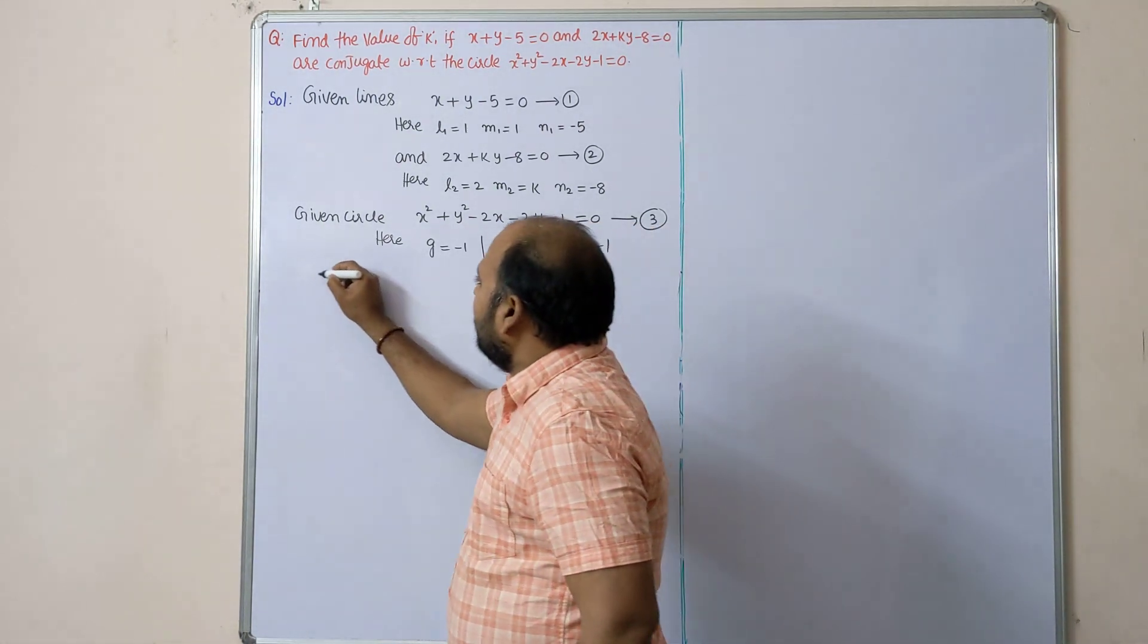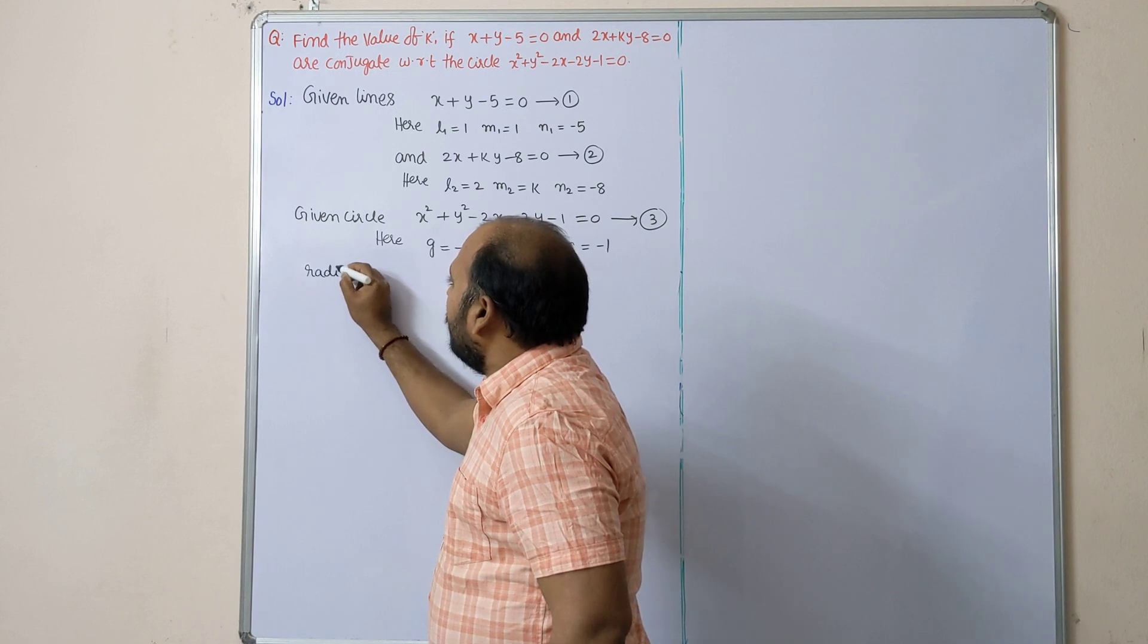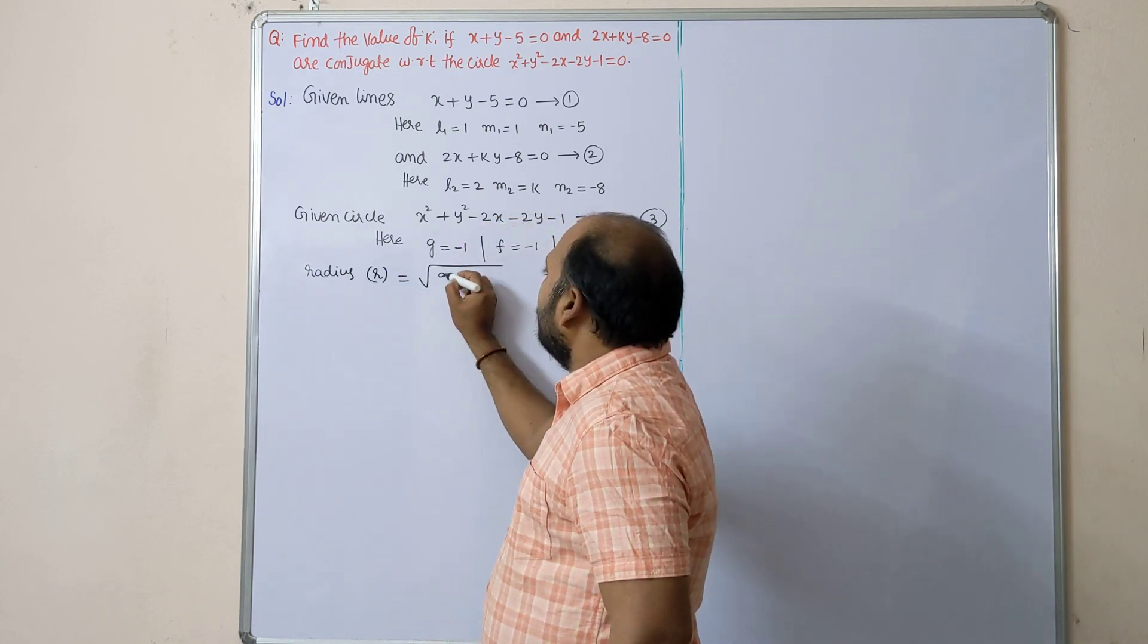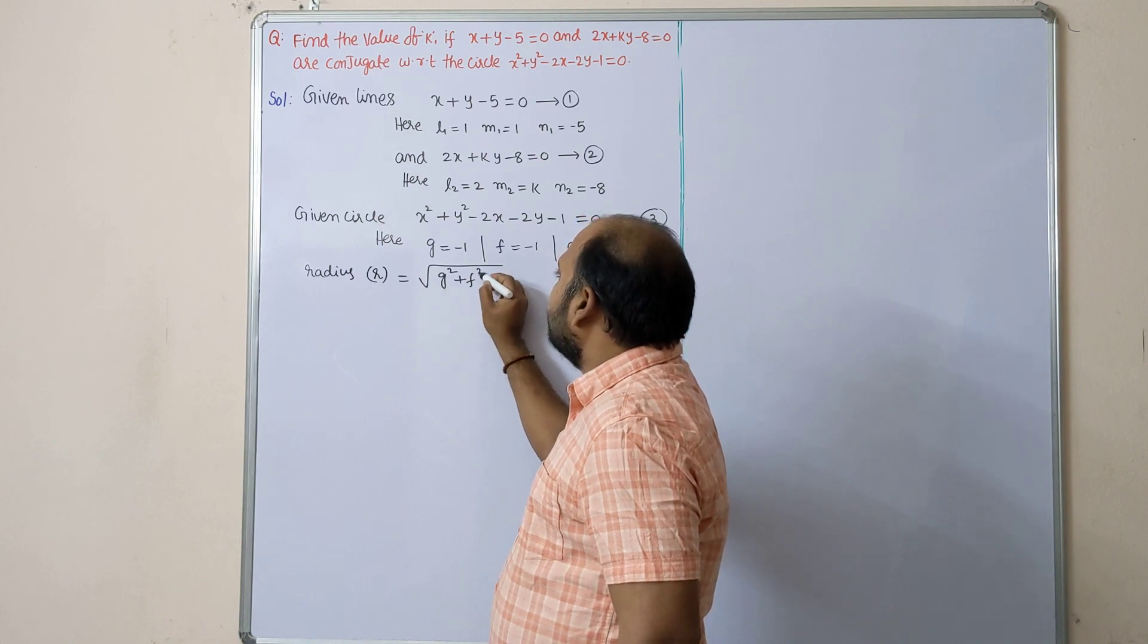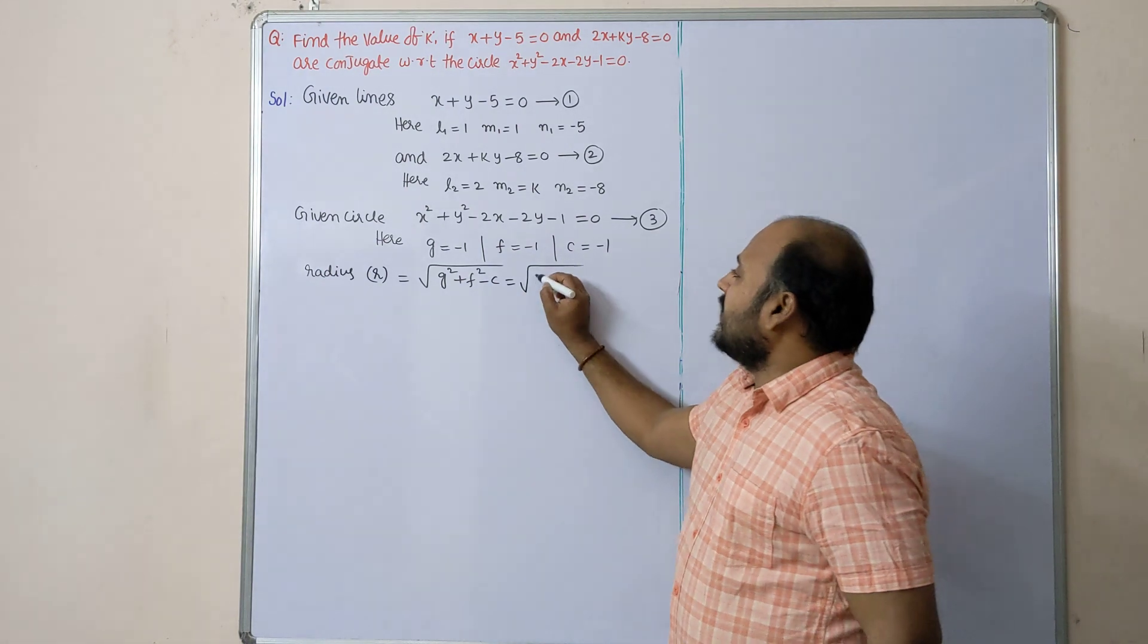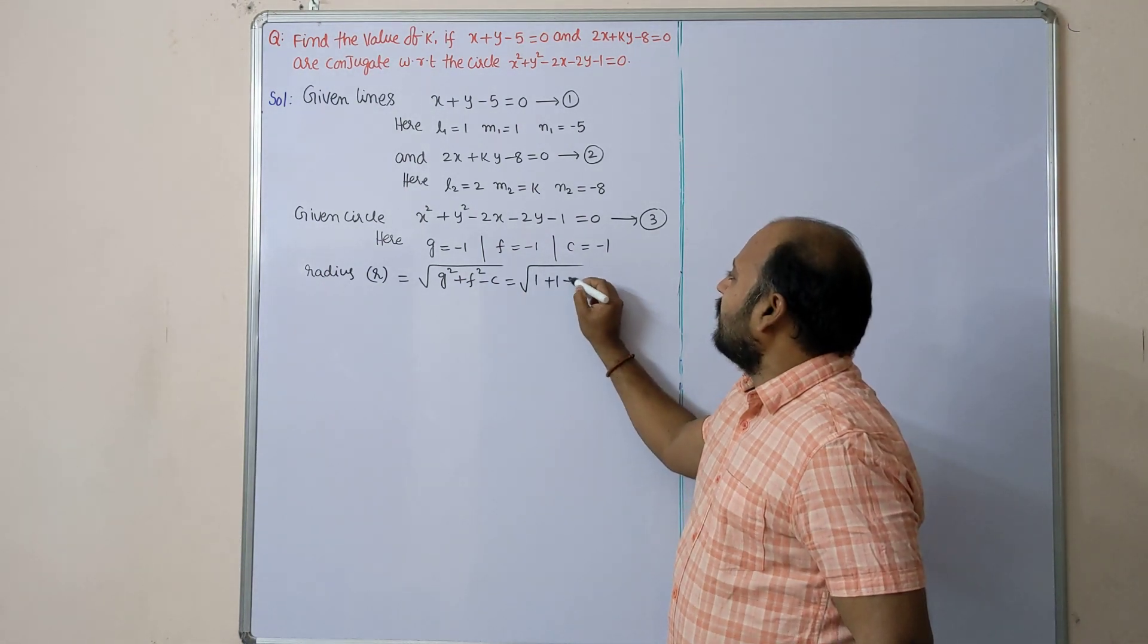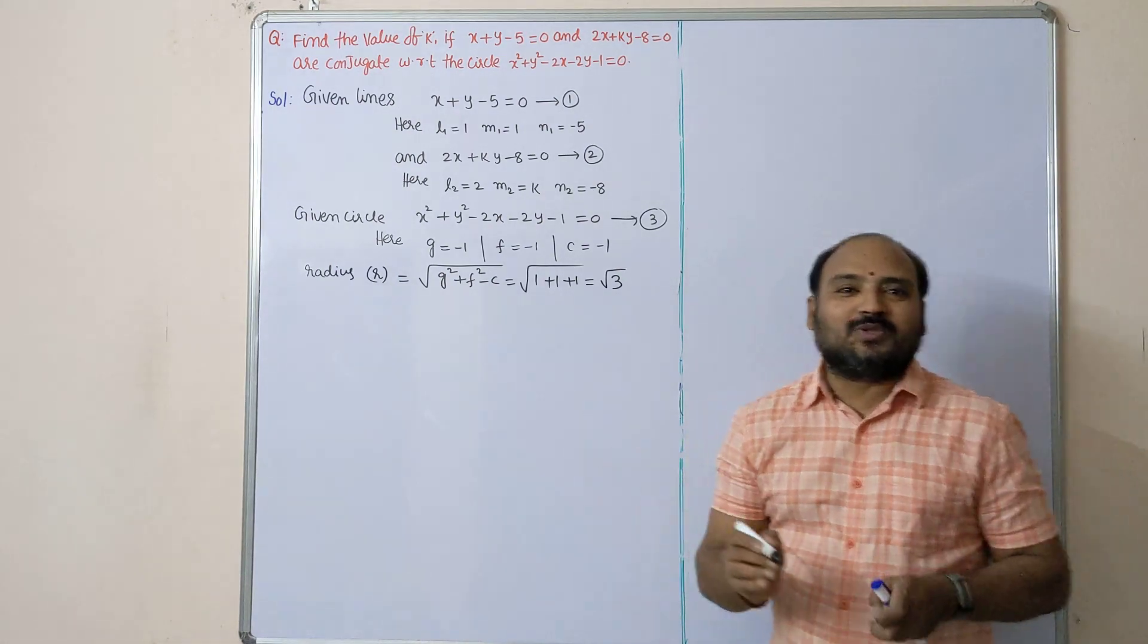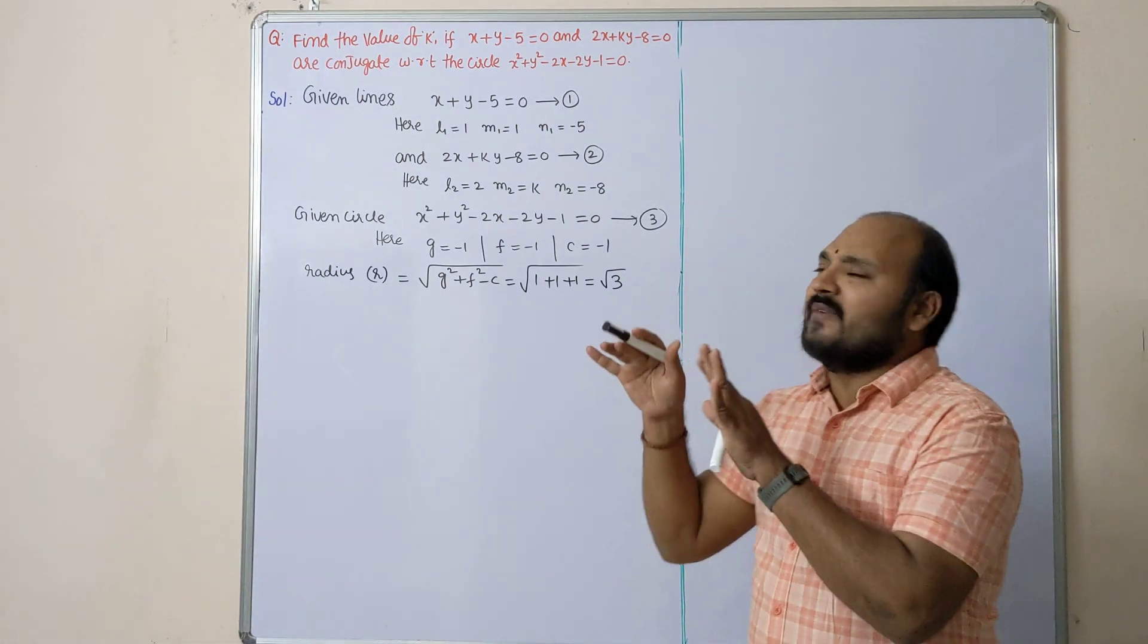Next, radius of the circle. Radius r = √(g² + f² - c) = √((-1)² + (-1)² - (-1)) = √3. So r value we got it as root 3. Till here everyone clear?